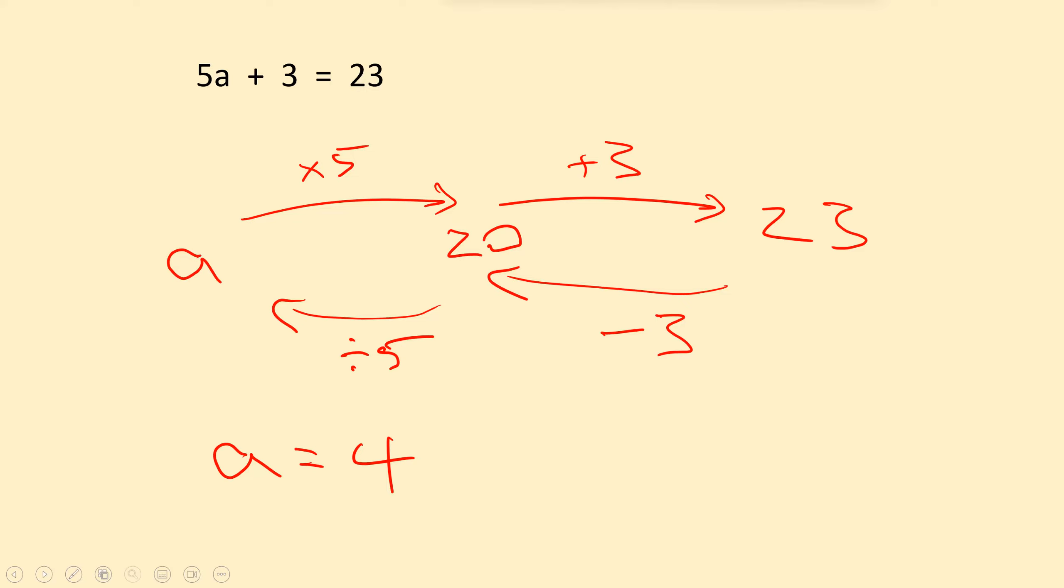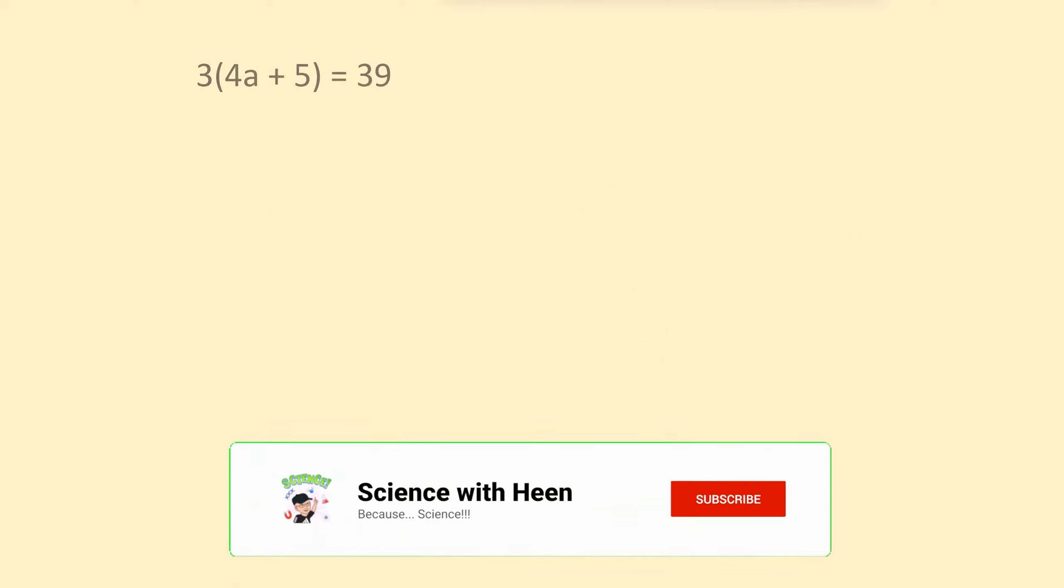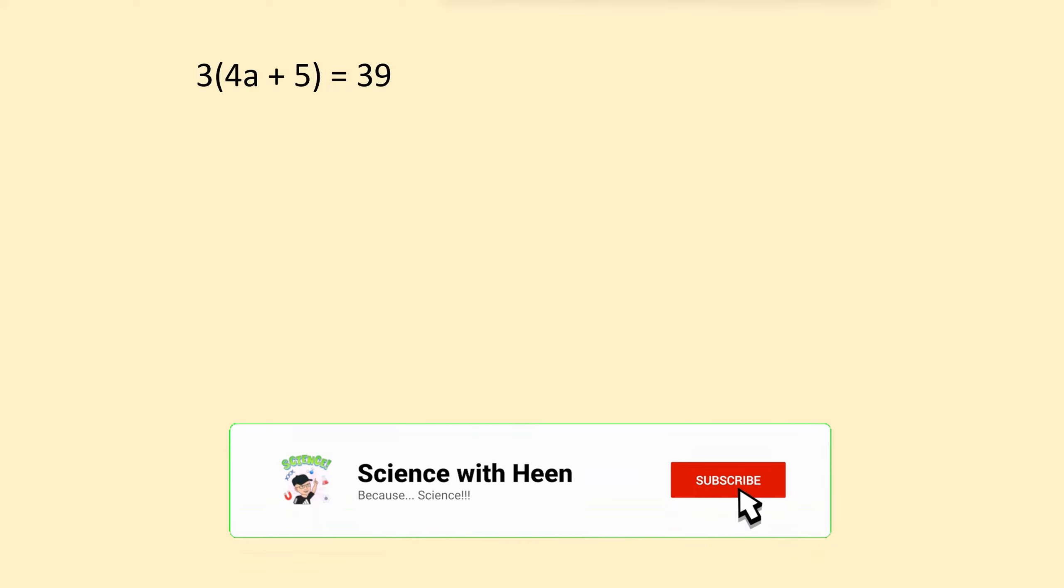So let's look at a couple of other examples now. Here we have 3 into 4a plus 5 equals 39. That might be lovely. That's well and good. But I want to know what a is equal to. So we ask ourselves, what has happened to the a?